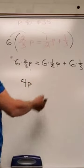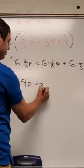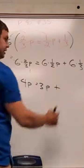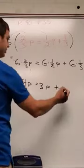Over here is 6 times 1/2, or 1/2 of 6 is 3. 3p plus 6 times 1/3, 1/3 of 6 is 2.